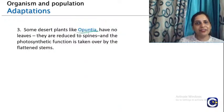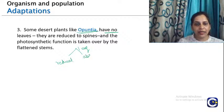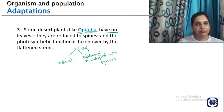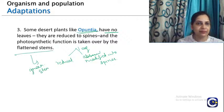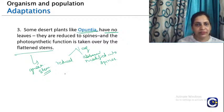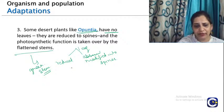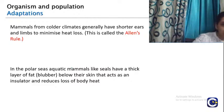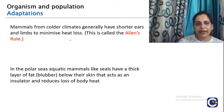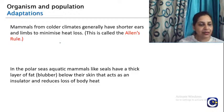Some desert plants like Opuntia have no leaves — they are either reduced or absent, modified into spines. The photosynthetic function is taken over by the flattened green stem. They have two types of chloroplasts: granal and agranal — this is the Kranz anatomy. The examples of kangaroo rat and xerophytic Opuntia are very important.